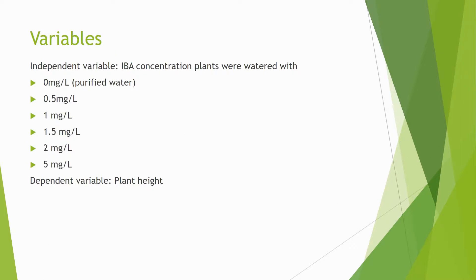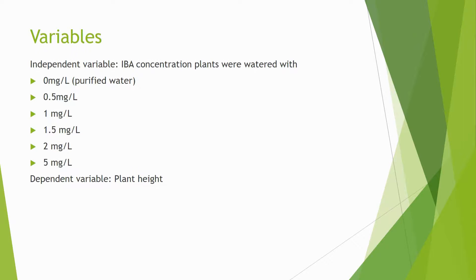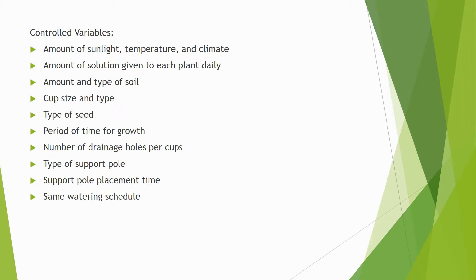The independent variable in this experiment is the IBA concentration that plants are watered with, and the dependent variable is plant height. Some controlled variables included the plant's environment, the amount of solution given to each plant daily, along with other factors that might influence plant growth.